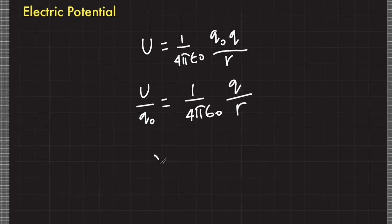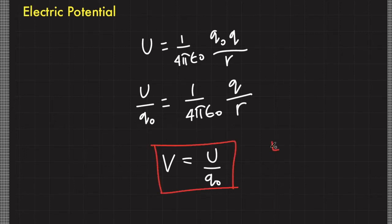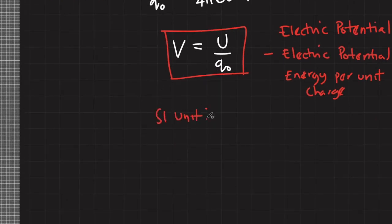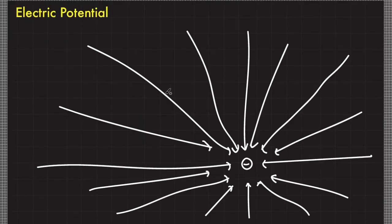This is the definition of electric potential, and we use the variable capital V to represent electric potential. Electric potential is defined as electric potential energy per unit charge. The SI unit of electric potential is the volt. One volt is equal to one joule per coulomb. Through the concept of electric potential, we can now assign each point in space a scalar value that describes the ability of the vicinity to alter the state of an electric charge under the presence of a source charge.